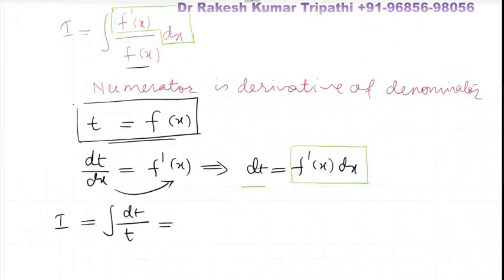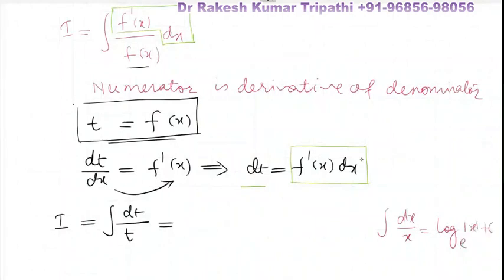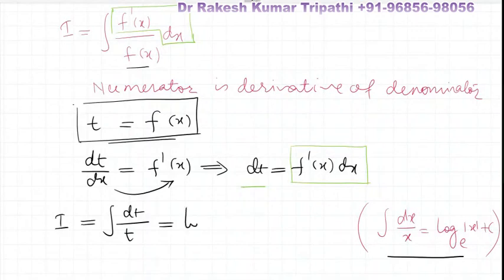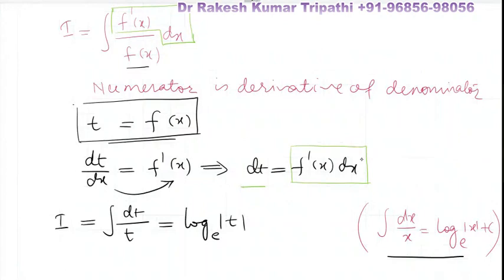Now we ensure that the whole integral has been converted into t only — there should be no x at all. As you know, the integration of dx upon x is log of mod of x base e plus c. Similarly, the integral of dt upon t, since we are integrating with respect to t, its integration will be log of mod of t, base e, plus an integral constant c.